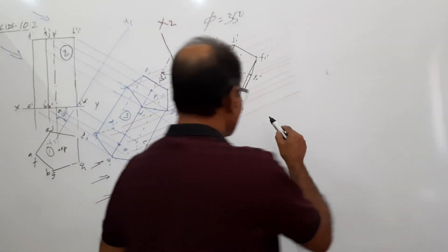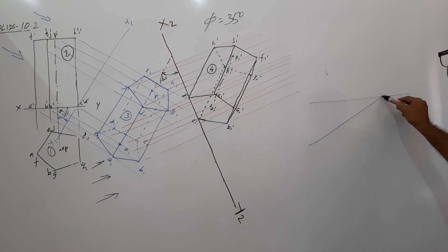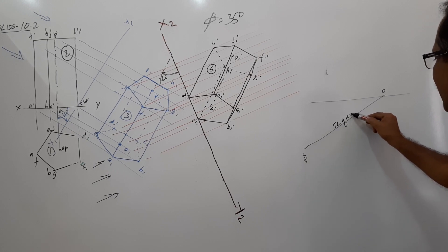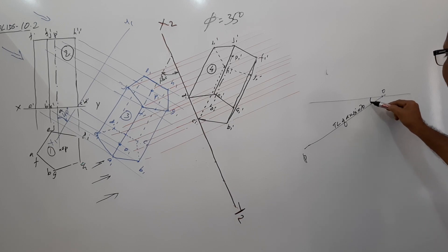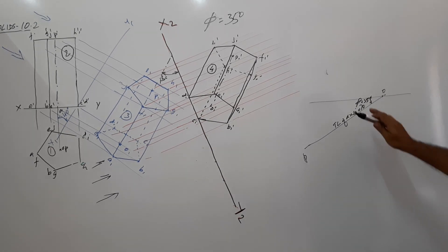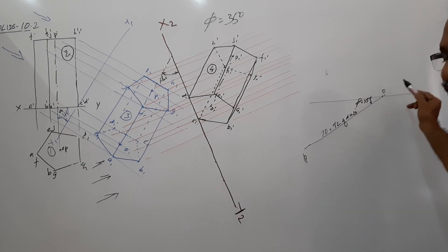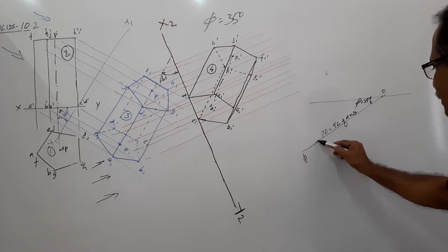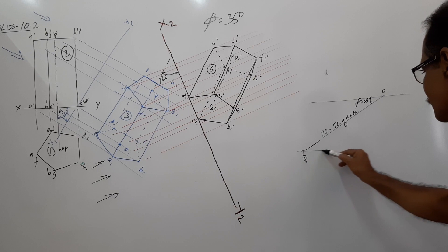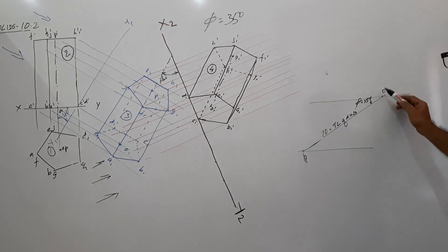How do you find beta? Draw a line anywhere. Take any point — this is O, this is P. What is its length? It is the true length (TL) of the axis, which is 17. This angle is phi, equals 35 degrees. 70 equals TL of axis — true length of axis. Then draw a locus. Take the plan length of axis from the plan: O to P1 is the plan length of axis.